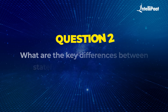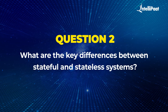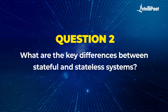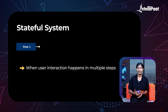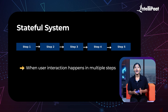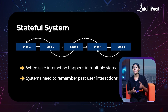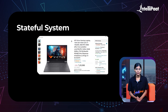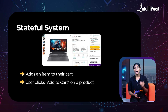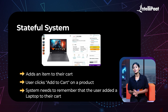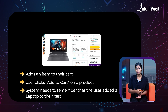Moving on to the next question: what are the key differences between stateful and stateless systems? In a very simple context, stateful systems are when user interaction happens in multiple steps and the previous actions matter, meaning the system needs to remember past user interactions. Like when a user visits a website such as Amazon and adds an item to their cart — the user clicks 'add to cart' on a product and the system needs to remember that the user added a laptop to their cart.